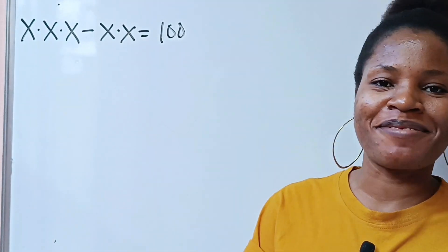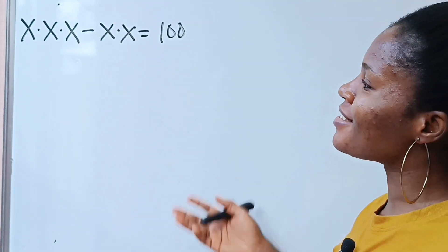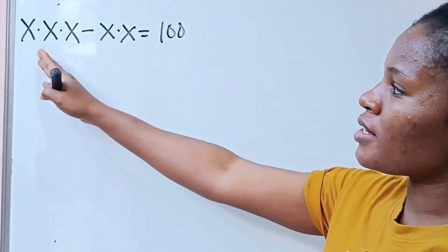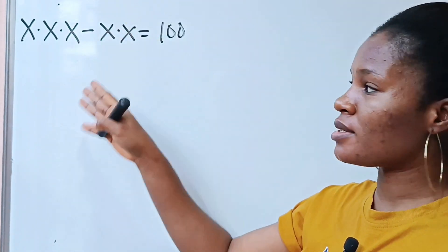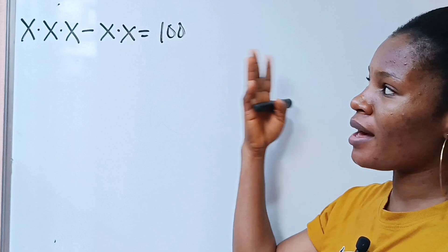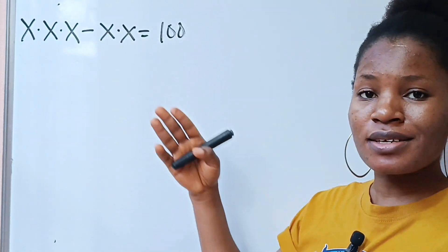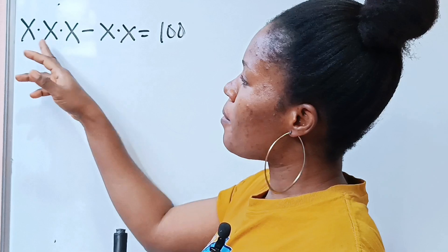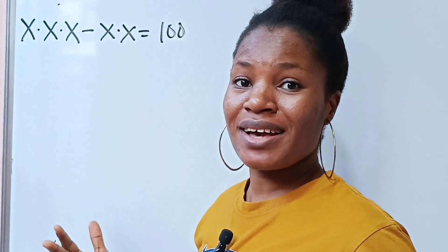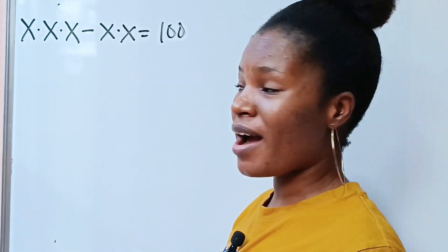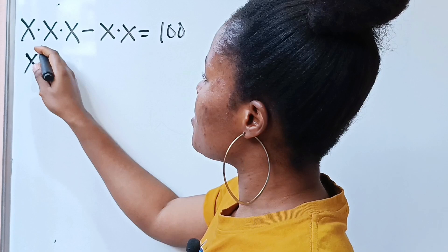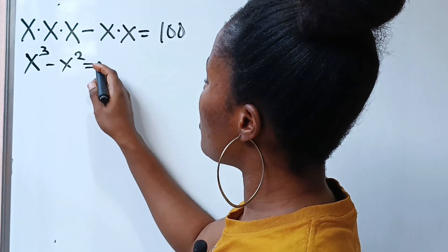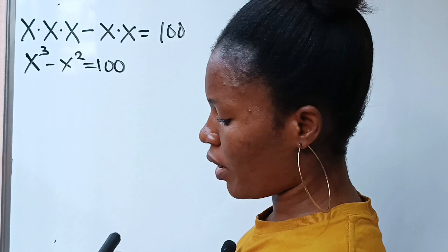Hi, welcome to my channel. Today let's solve what we have on the board. We have x multiplied by x multiplied by x, minus x multiplied by x, is equal to 100. So x multiplied by x multiplied by x is simply x to the power of 3, so we can write x to the power of 3 minus x squared is equal to 100.